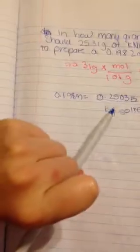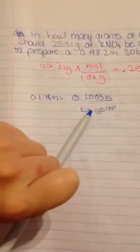This is 0.25035 divided by 0.1982. Plug this into your calculator, which gives you 1.26312 kilograms of water. That's your answer.